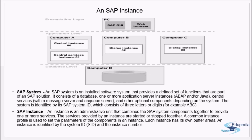Now let's look at what an SAP instance is. There are two terms: SAP system and SAP instance. An SAP system is an installed software system that provides a defined set of functions as part of an SAP solution. It consists of a database, one or more application server instances (web or Java), central services (the message and enqueue server), and other optional components. The system is identified by its SAP System ID, which is three digits or letters.